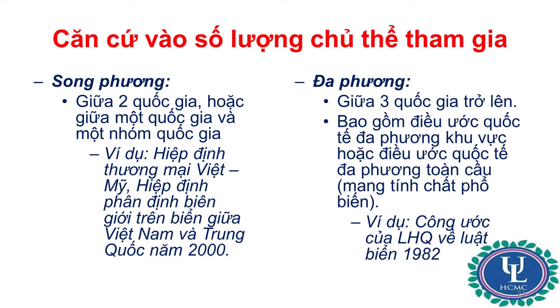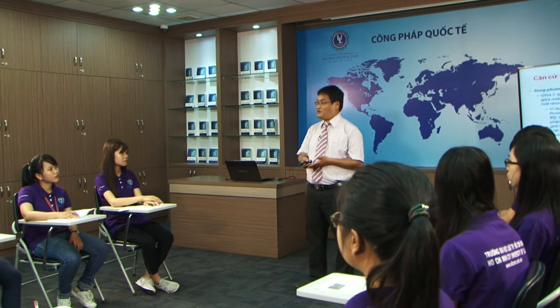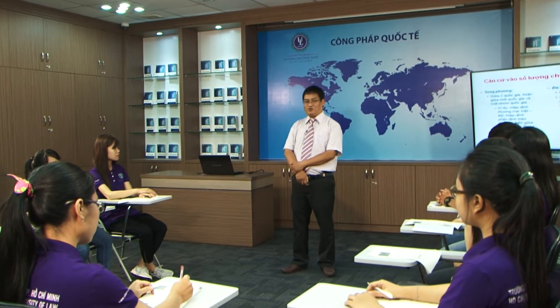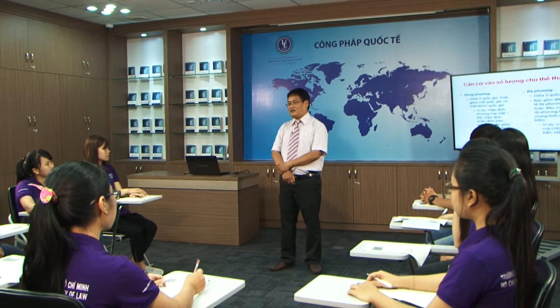Loại thứ hai là những điều ước quốc tế đa phương mang tính chất toàn cầu, hay còn gọi là điều ước mang tính chất phổ biến. Ví dụ tiêu biểu là Công ước của Liên Hợp Quốc về Luật Biển năm 1982 – văn kiện pháp lý quan trọng điều chỉnh các vấn đề khai thác, sử dụng, quản lý và bảo vệ môi trường biển, đảm bảo hòa bình ổn định giữa các bên trên các vùng biển.